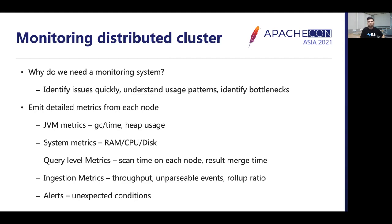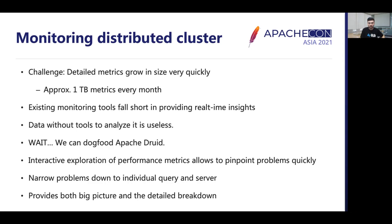These may seem like a lot of metrics, but all of them were essential for gaining a deep understanding of the service. The metrics emitted became very large — as large as a few terabytes every month. Existing monitoring tools were mostly designed to store aggregated metrics but failed to provide insights at this scale. But the data store we were building was designed for the exact same use case — providing real-time insights into data in motion. So we spun up a separate metrics cluster powered by Druid and dogfooded it with metrics from our production service.